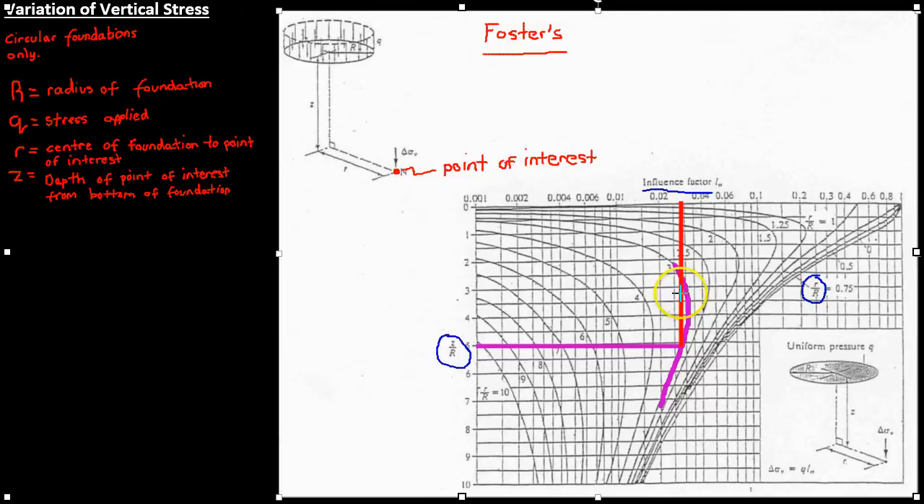Then finally, the change in stress at the point of interest is found by simply q times the influence factor. And that gives us our delta sigma Z, the change in stress.